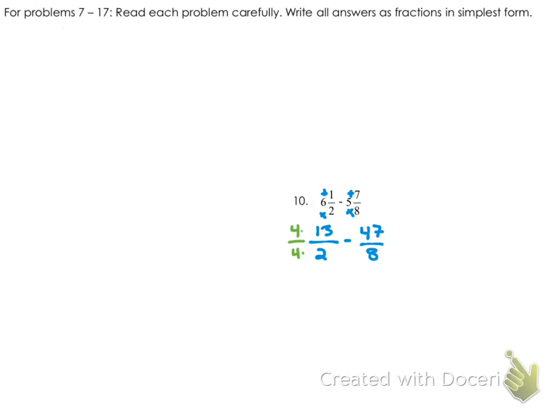So 4 times, let's see, we've got 4 times 13 for the top, which is going to be 52. Okay, and then we have 4 times 2 on the bottom, which is 8, and we're subtracting off 47 eighths.